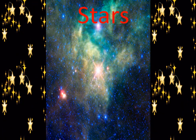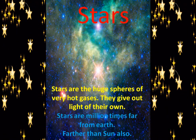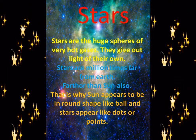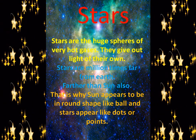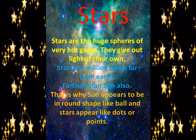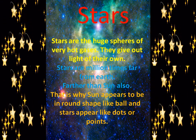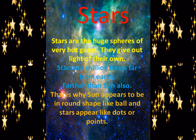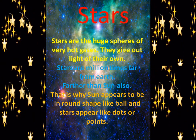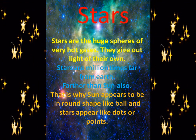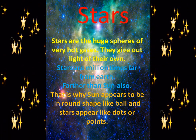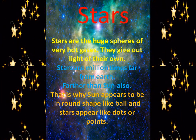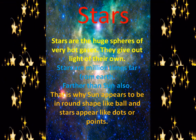Now let us know what are the features of stars. Stars are huge spheres of very hot gas. They give out light of their own — it means they are luminous. Stars are millions of times farther from earth than the Sun. Because the Sun is near to earth, it appears to us as a sphere, while stars are very far from us and that is why they just appear as dots or points.